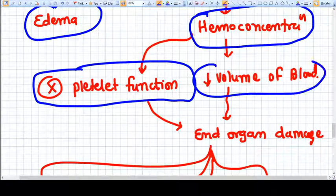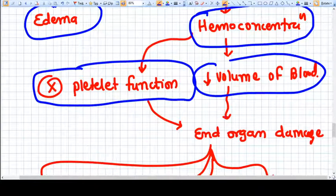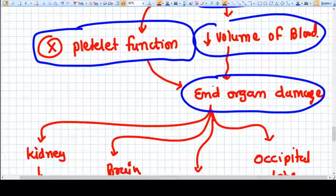Because of decreased volume of the blood, lesser and lesser amount of blood reaches to the end organs. Which are the end organs? Kidney, brain, lungs.